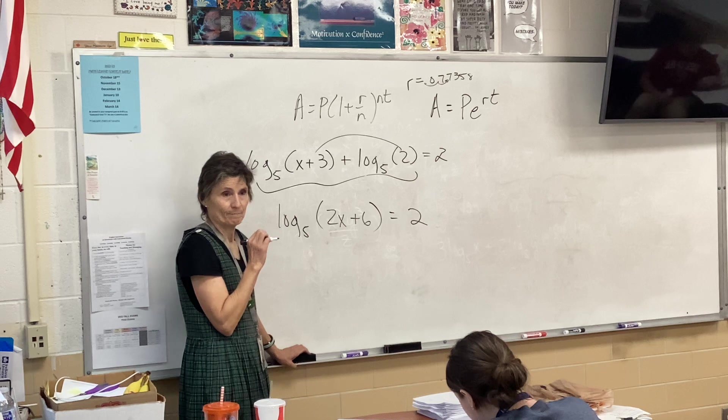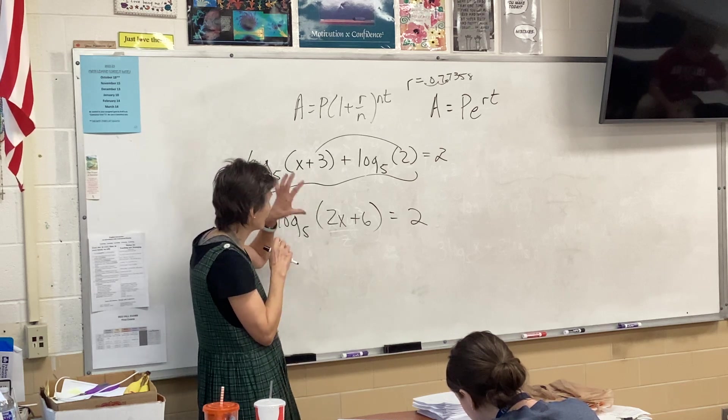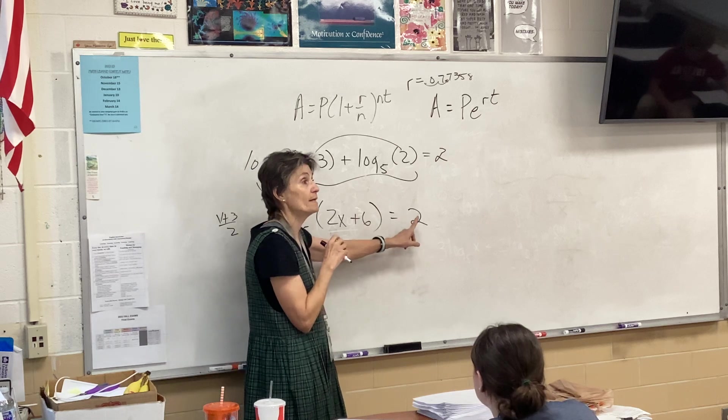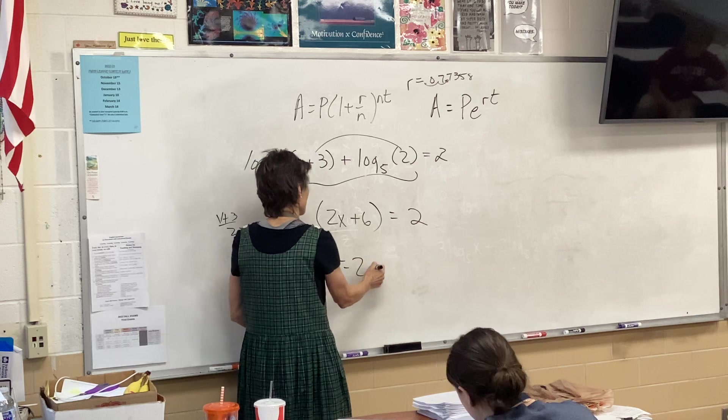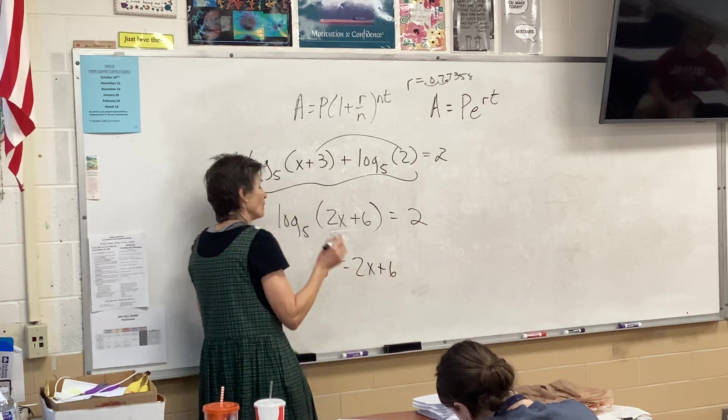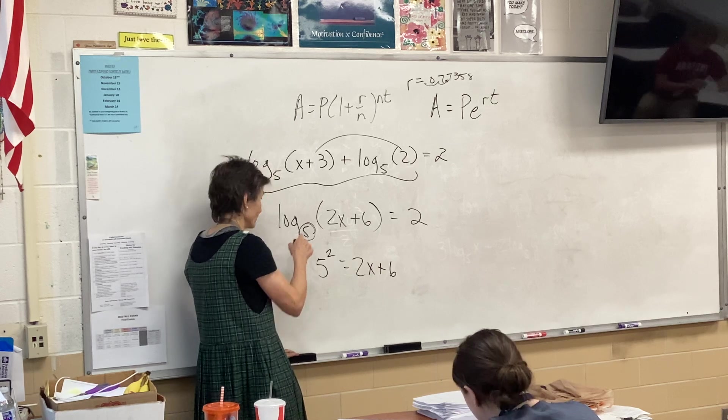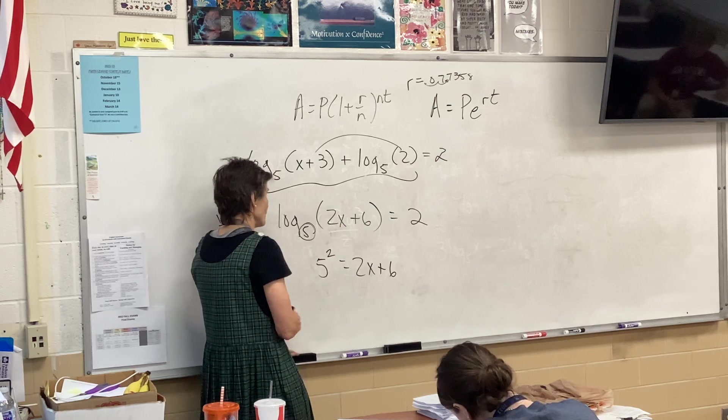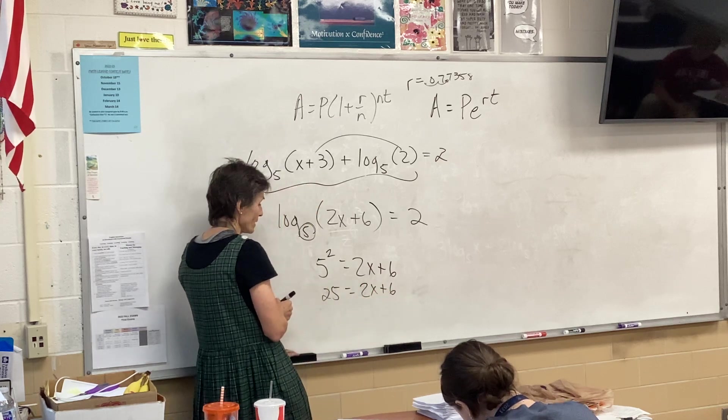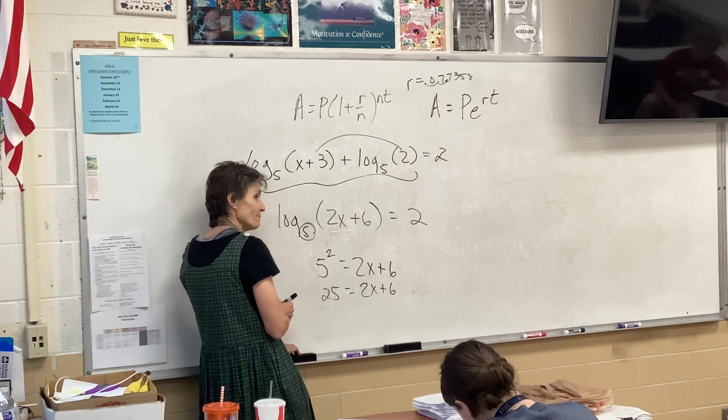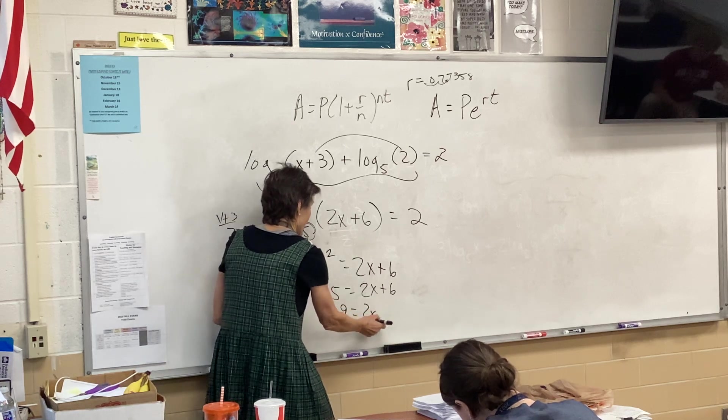Now I only have one logarithm. Now, what do I do when I have log equals a number? We loop-de-do. We loop-de-do. So 5 squared equals 2x plus 6. And when we loop-de-do, this is the number we start with, right? Always 5 to the second, which is 25. And then we just solve like a normal equation. So 25 minus 6.